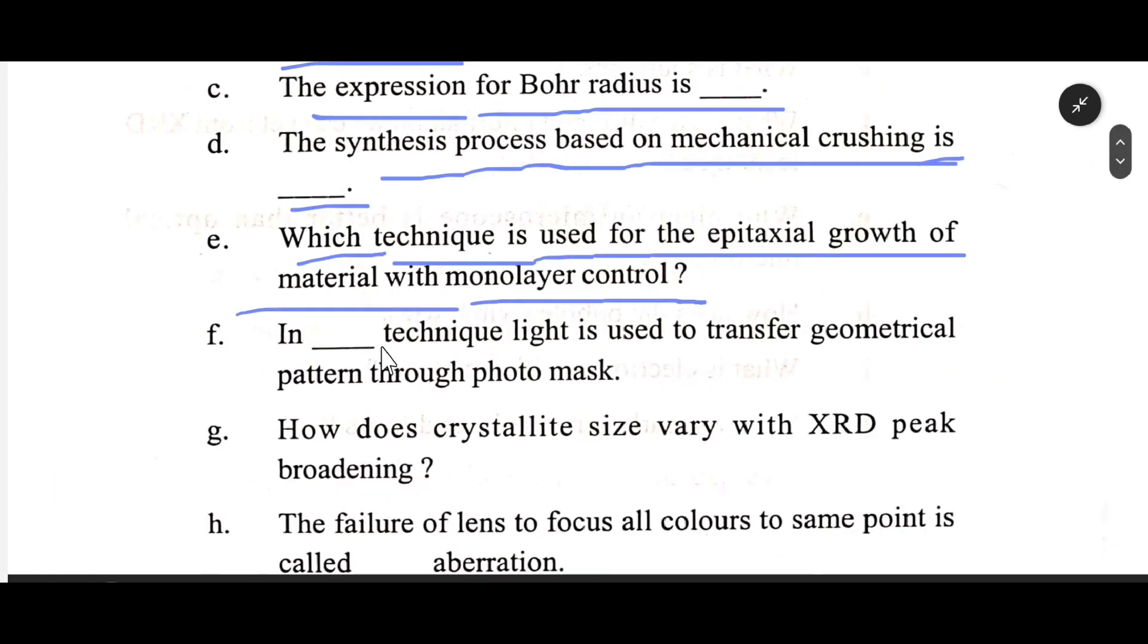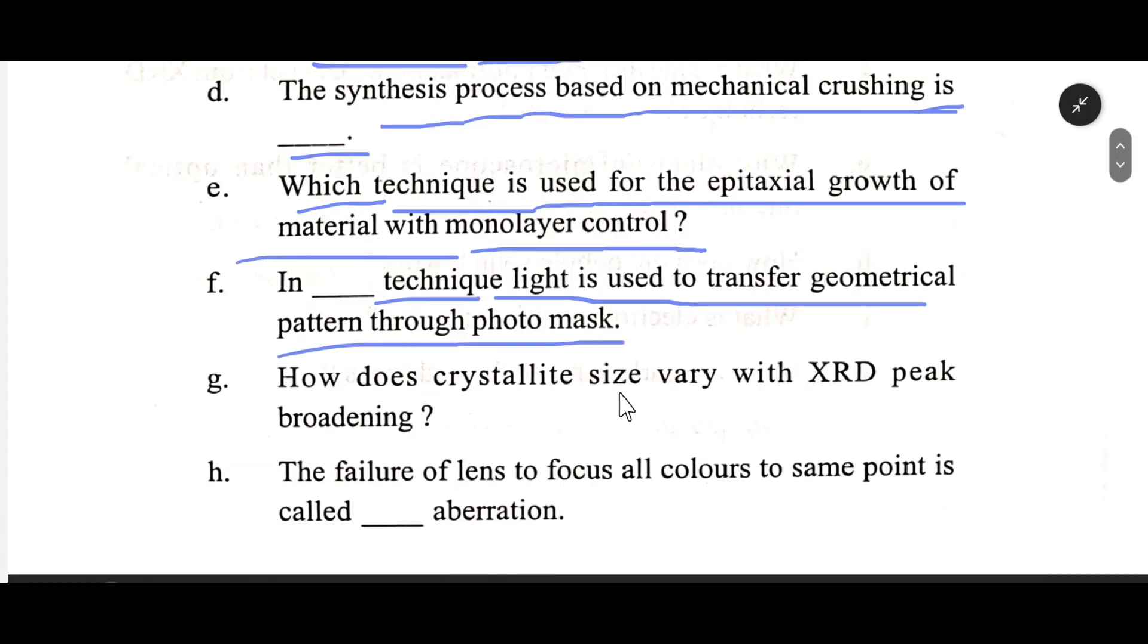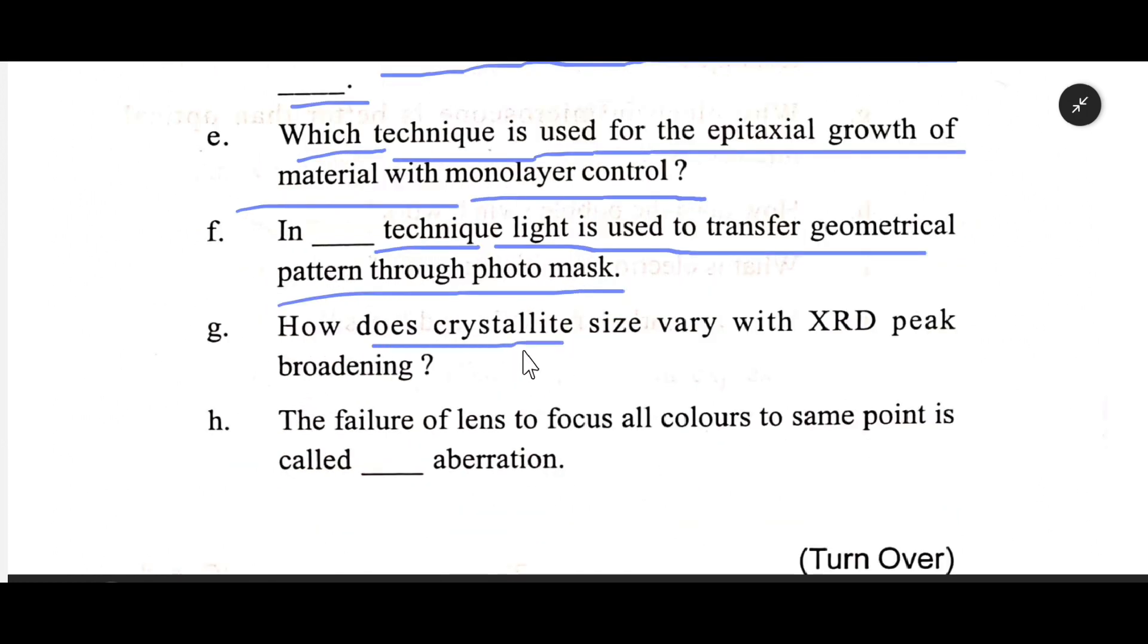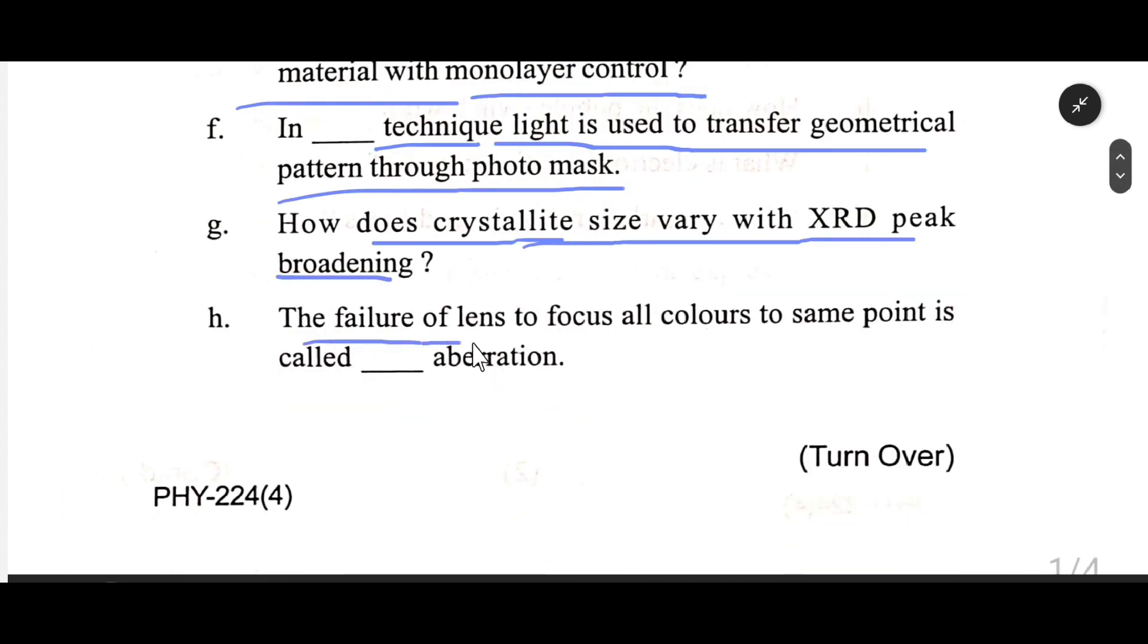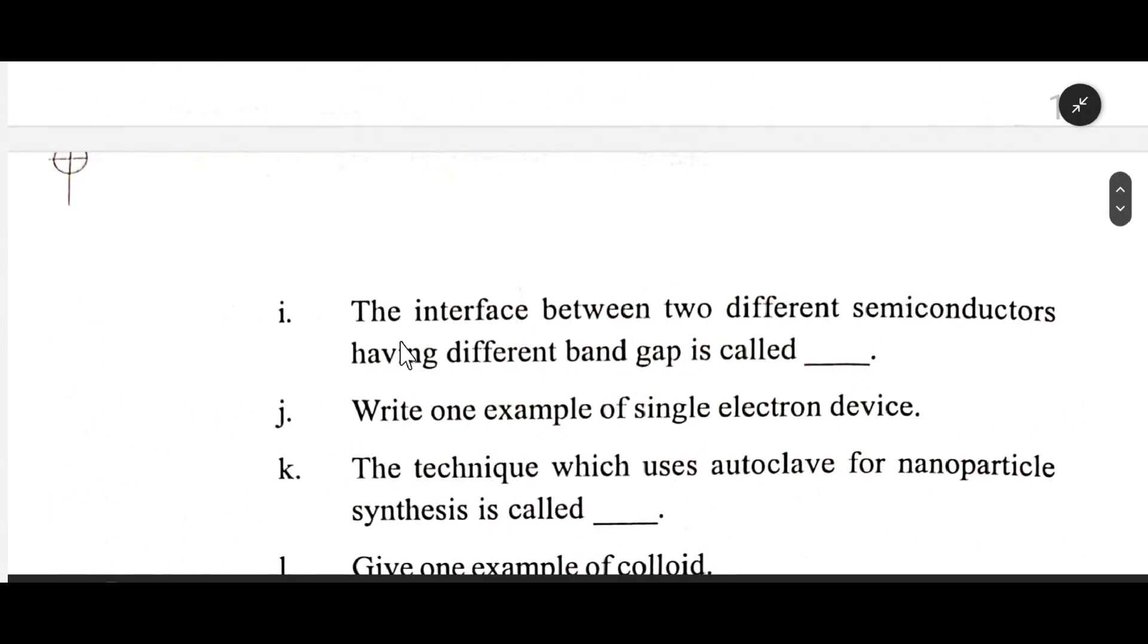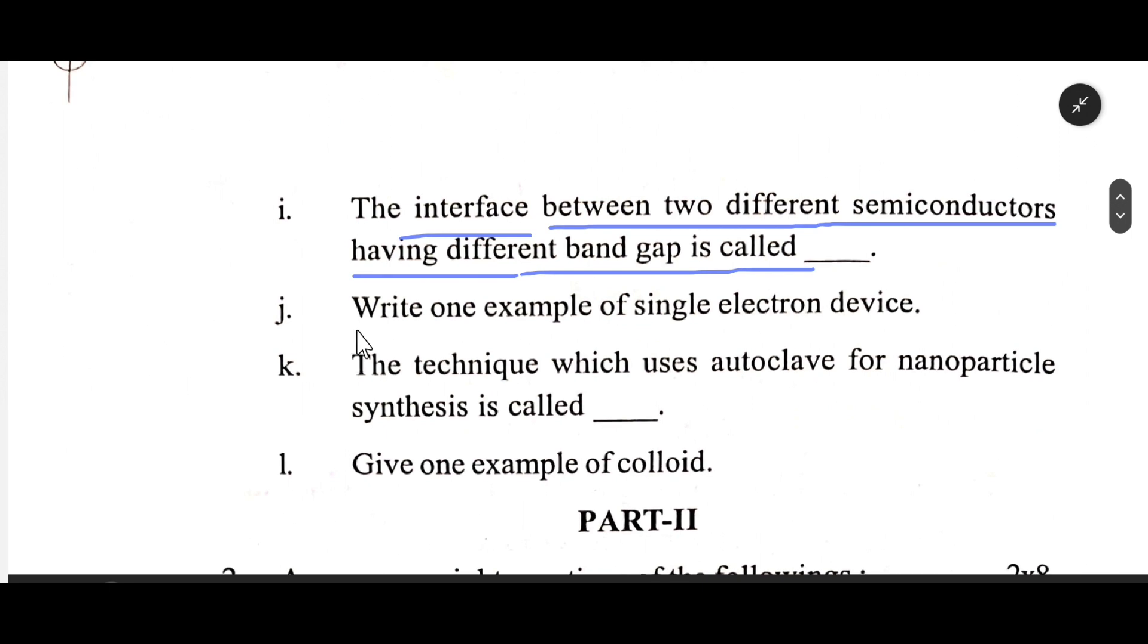Which technique is used for the epitaxial growth of metal with a monolayer control? In dash technique, light is used to transfer geometrical pattern through photomask. How does crystallite size vary with XRD peak broadening? The failure of lens to focus all colors to same point is called dash aberration.